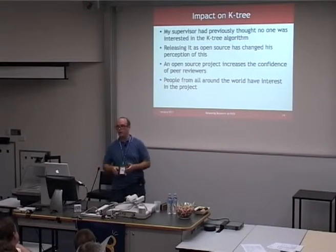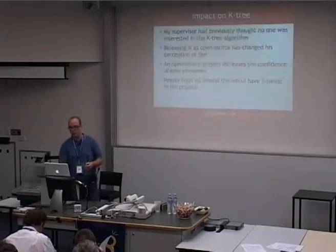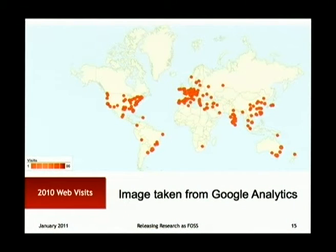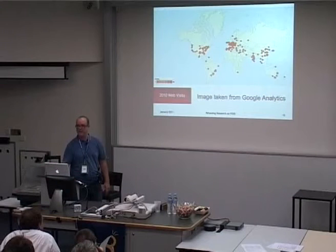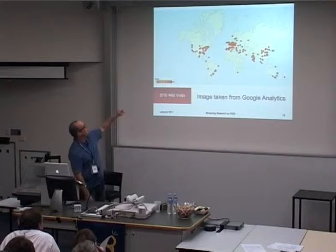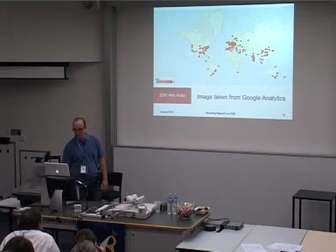I've been using Google Analytics to track who visits the K-Tree homepage. People from all around the world have come and had a look, downloaded papers, and downloaded the source — pretty much everywhere except Africa, though there is someone in South Africa. Not much in Canada. The one on the left there is probably Vancouver, and there's Toronto there as well by the looks of it, up near New York.